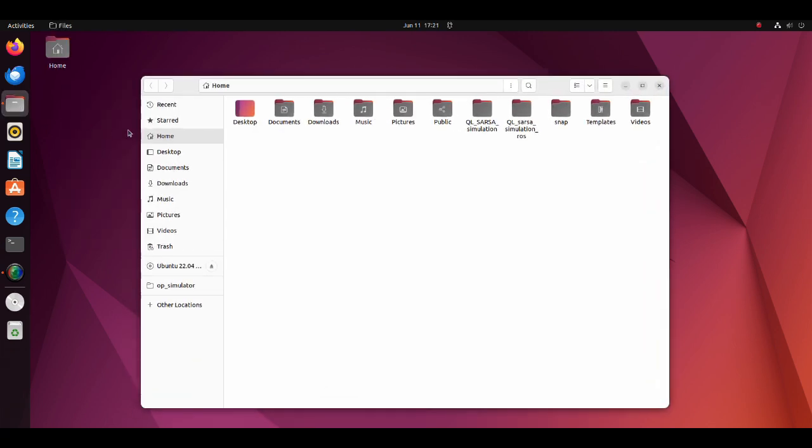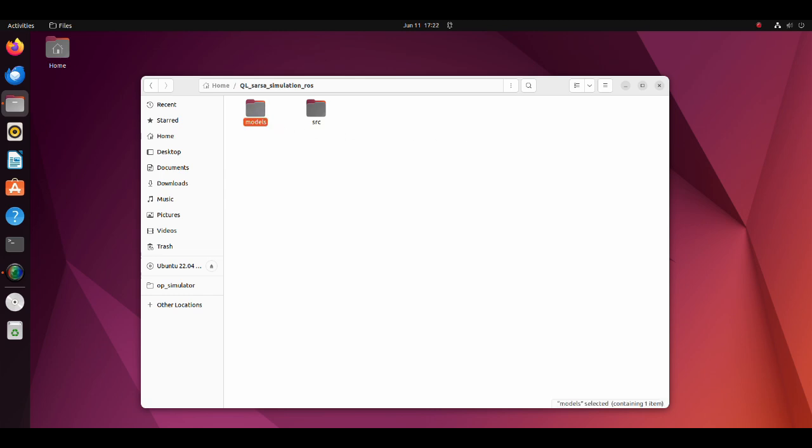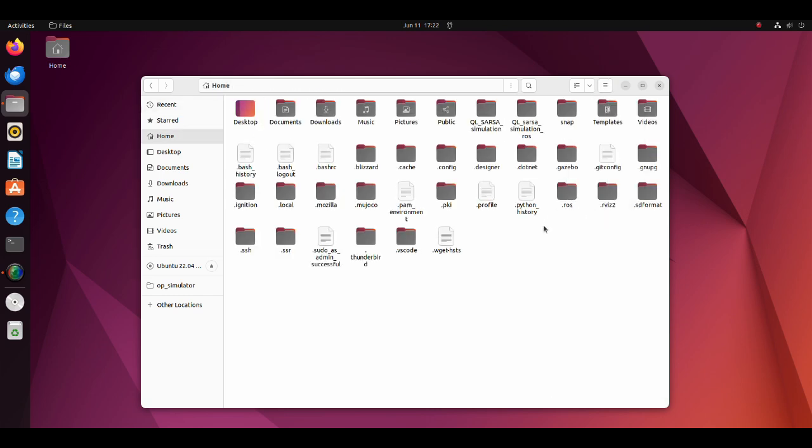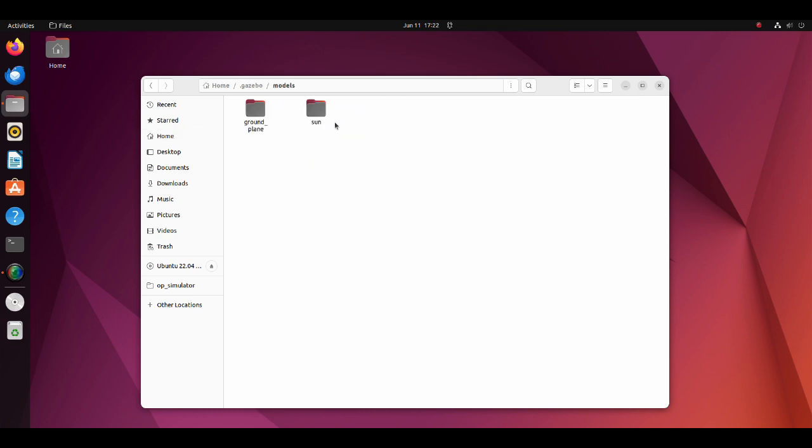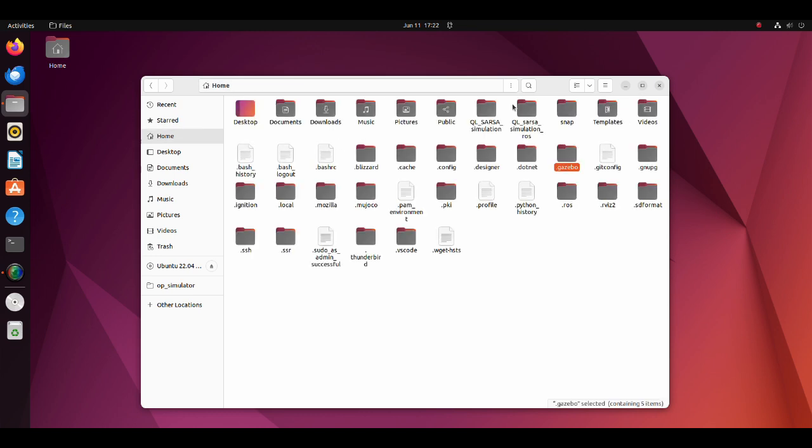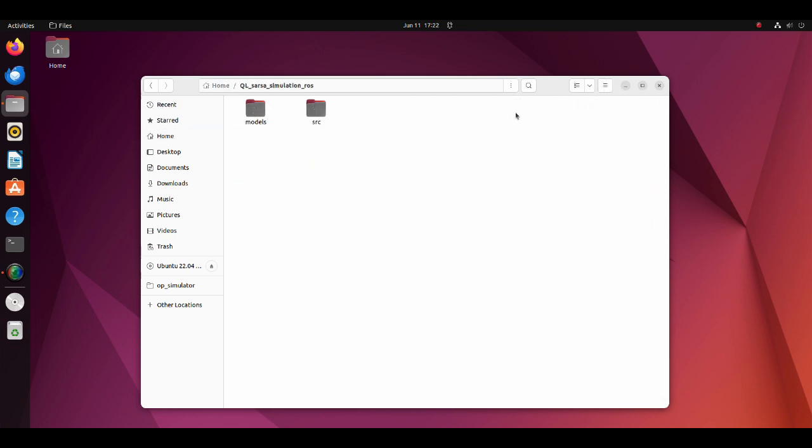To run the ROS version of cliff walk, please download the QL SARSA simulation ROS zip file and extract it into your home directory. Move the cliff folder into the gazebo models directory. For the required packages for ROS2 and gazebo, please see this tutorial.